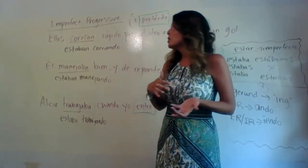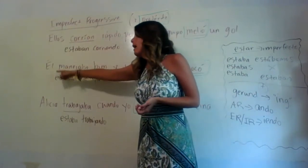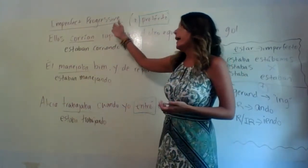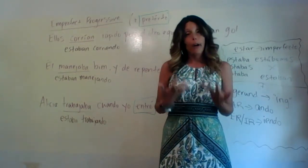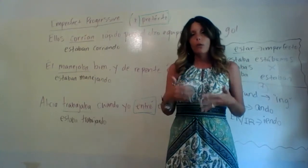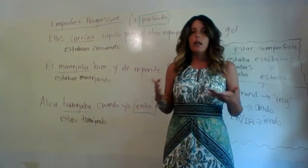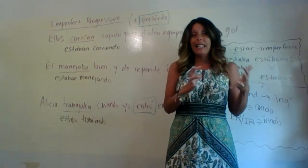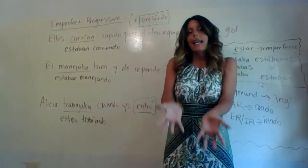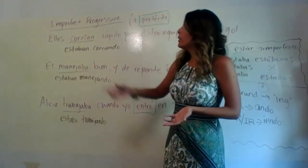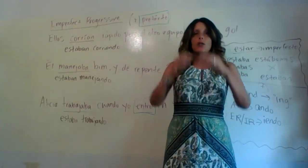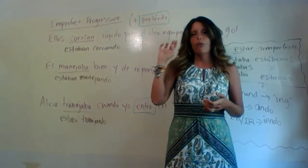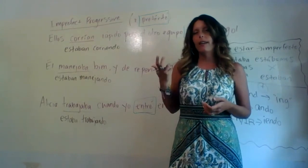In all of these sentences the imperfect takes on the meaning of 'was or were something -ing': they were running, he was driving, she was working. Whenever your imperfect takes on that 'was/were -ing' meaning, you can always take out the imperfect and replace it with the imperfect progressive. Some students prefer the imperfect progressive because, even though it's two words, it's more of a word-for-word translation from English to Spanish.